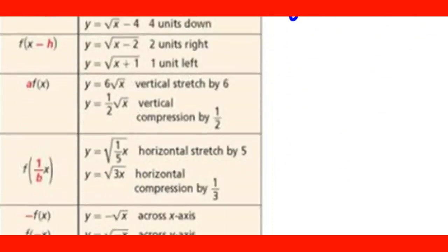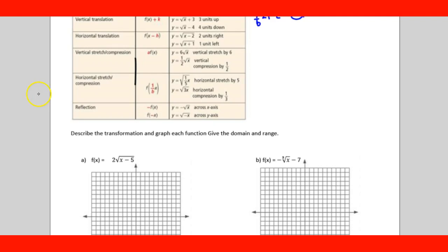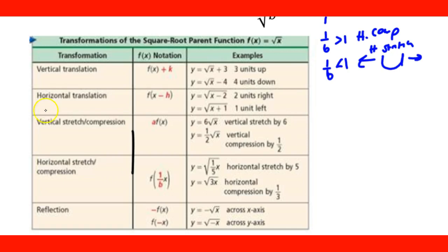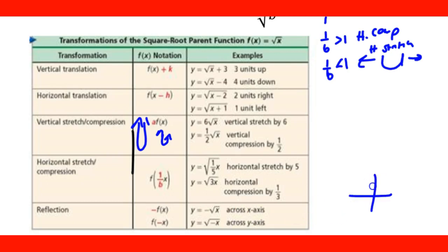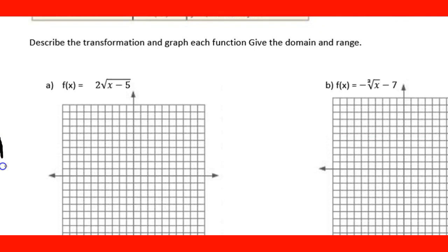This chart here explains all the rules in detail: +k moves up, −k moves down, −h shifts right, +h shifts left, a > 1 means vertical stretch (gets taller), a < 1 means vertical compression (gets shorter). The key reflection rules: if the negative sign is outside the radical, it reflects over the x-axis; if the negative is inside the radical, it reflects over the y-axis.